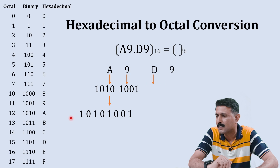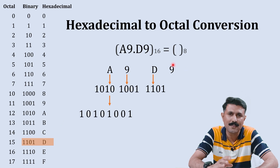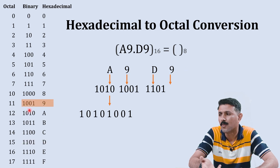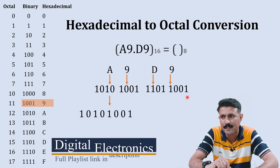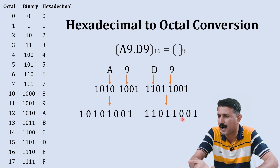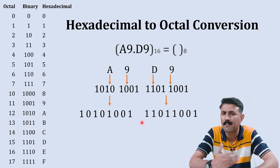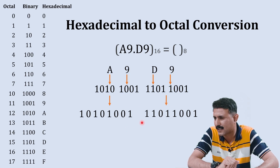In the fractional part, we have D — binary equivalent to D is one one zero one. Then nine — binary equivalent to nine is one zero zero one. We combine these to form the complete fractional binary number. Now for both the integer and fractional parts, we have the binary numbers ready to be converted into octal.